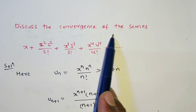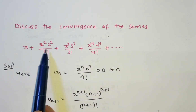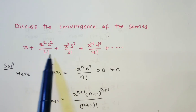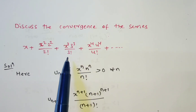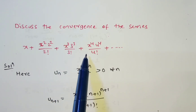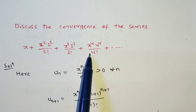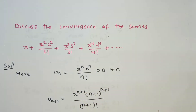Discuss the convergence of the series: x + x²·2²/2! + x³·3³/3! + x⁴·4⁴/4! and so on.